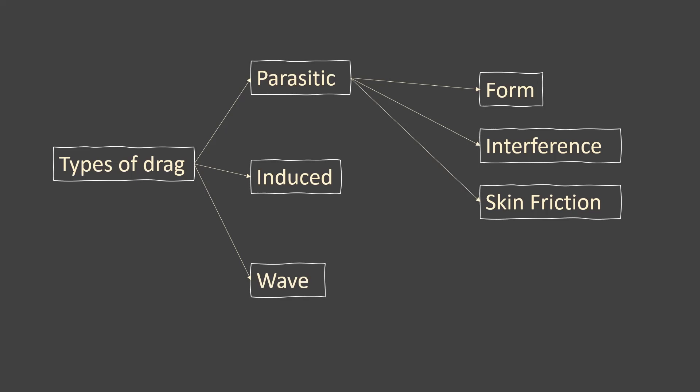Parasitic drag is classified into three types: form drag, interference drag, and skin friction drag.